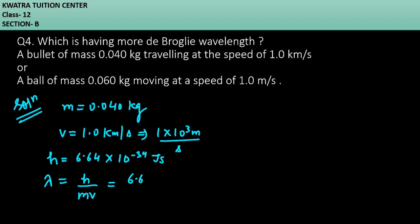Planck constant value substitutes first. Mass is 0.040, V is 1 into 10 raised to power 3. Now your answer for this will be approximately 1.65 into 10 raised to power minus 35 meter. Now you can find for ball.